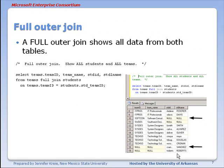You can see in the output, partial output shown here, that we have teams with no students. It shows up as null. We have students with no team.